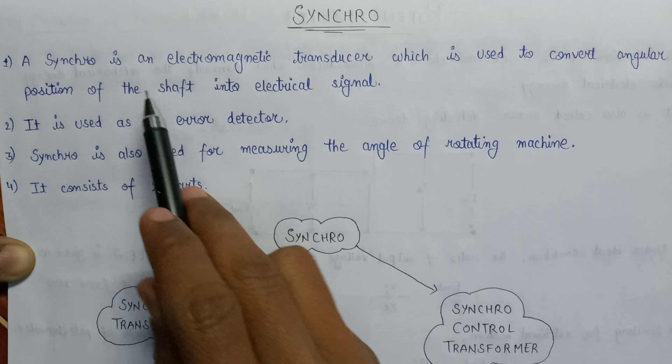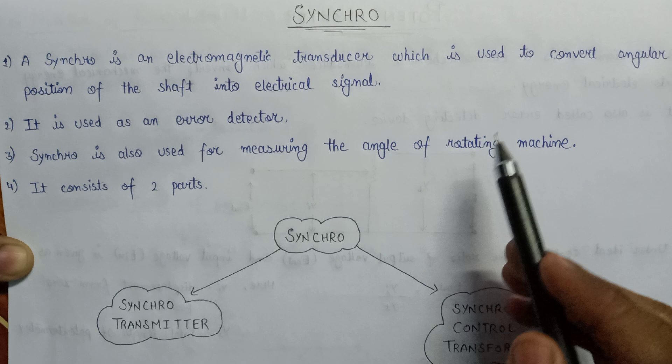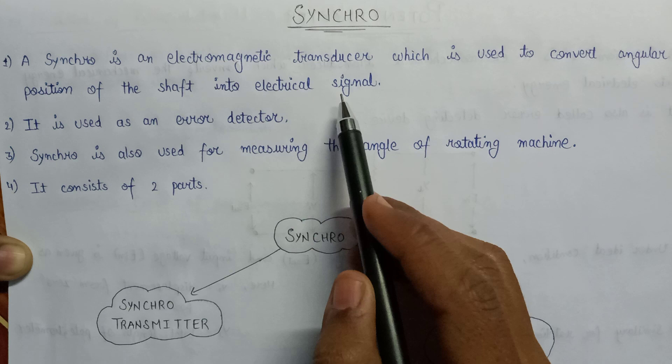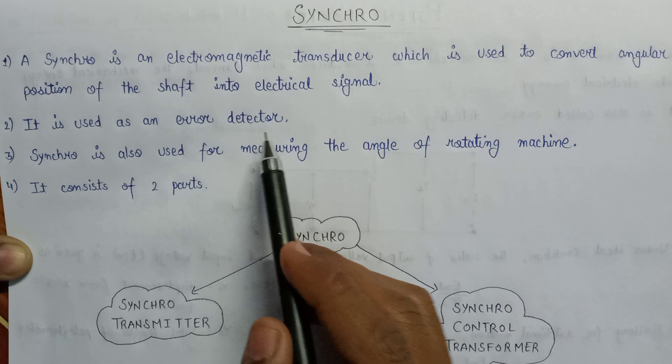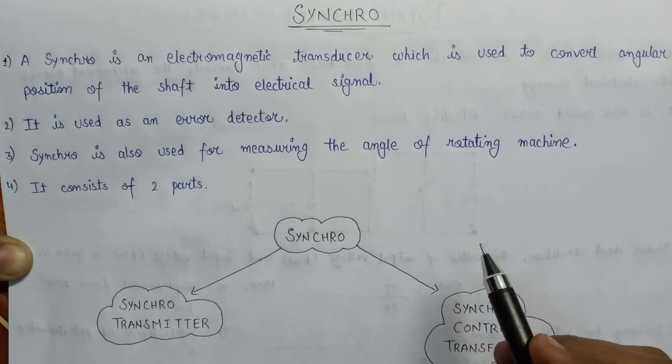Welcome. In this lecture we are going to learn about synchro. A synchro is an electromagnetic transducer which is used for the conversion of angular position of a shaft into an electrical signal. By rotating the shaft, we generate electrical signals based on its angular position. Synchro is also used as an error detector because it can efficiently detect errors, and it is used for measuring the angle of a rotating machine.